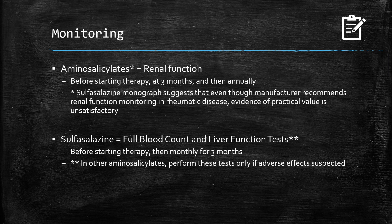For sulfasalazine specifically, it is a lot more likely to cause bone marrow disorders, blood dyscrasias, and liver issues. In that case, we would do FBCs and LFTs before therapy and then monthly for three months — that is where the BNF cuts off. For other aminosalicylates, not sulfasalazine, we would only do full blood count and liver function tests if adverse effects are suspected.